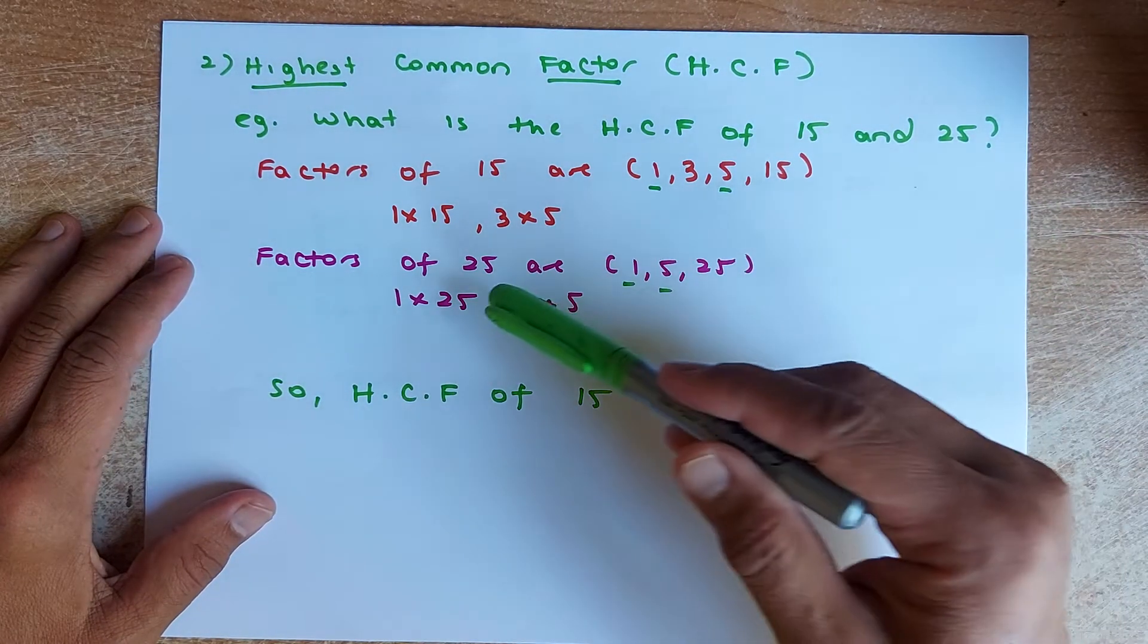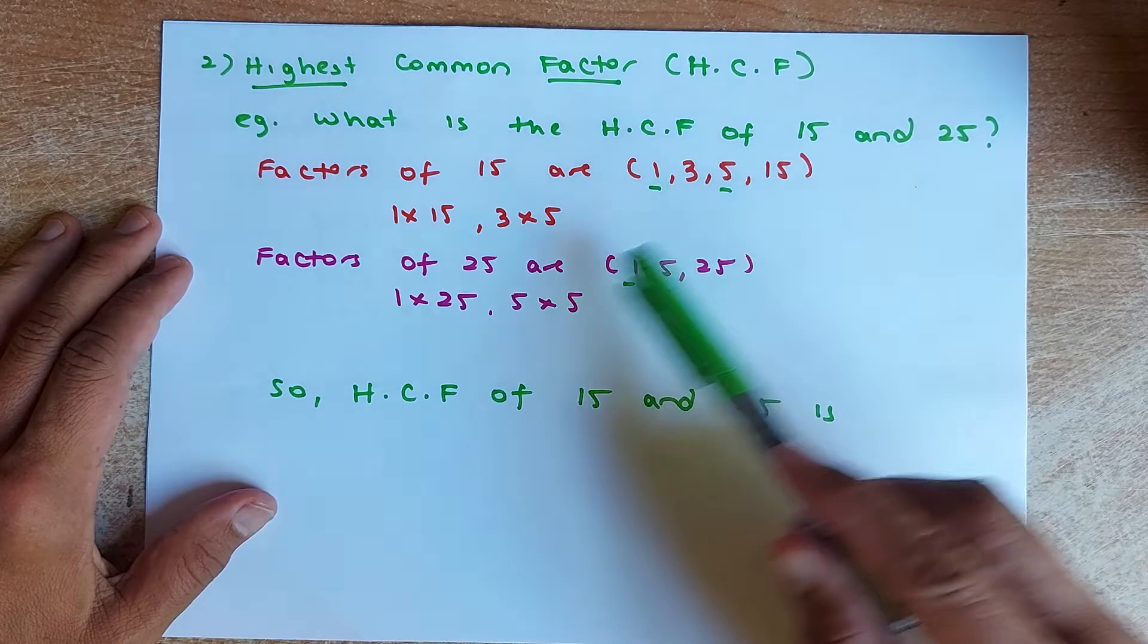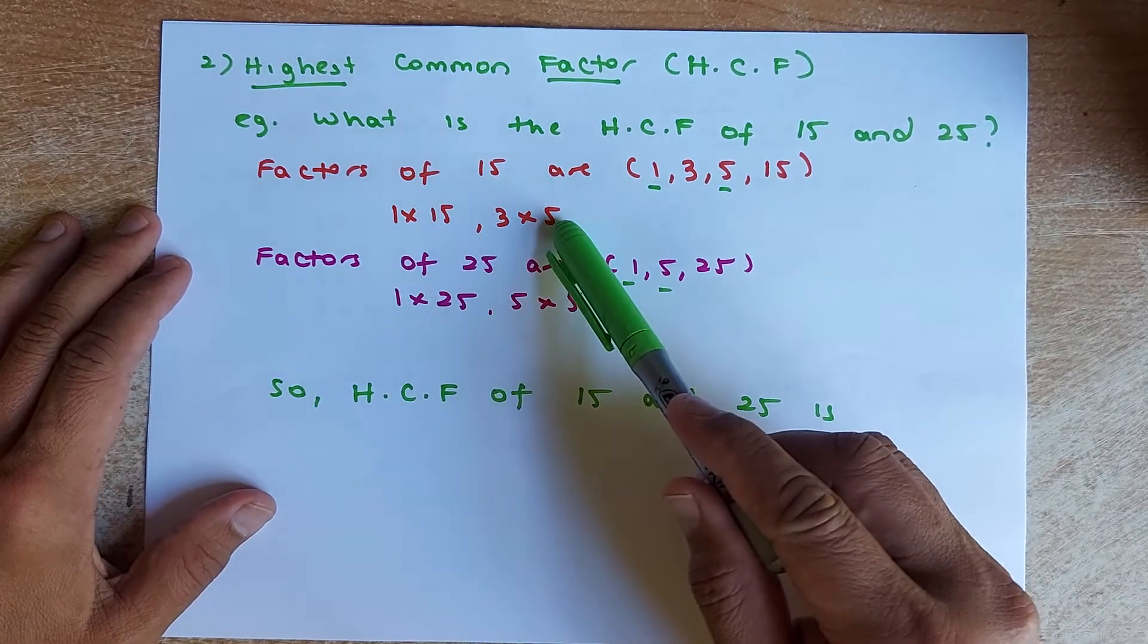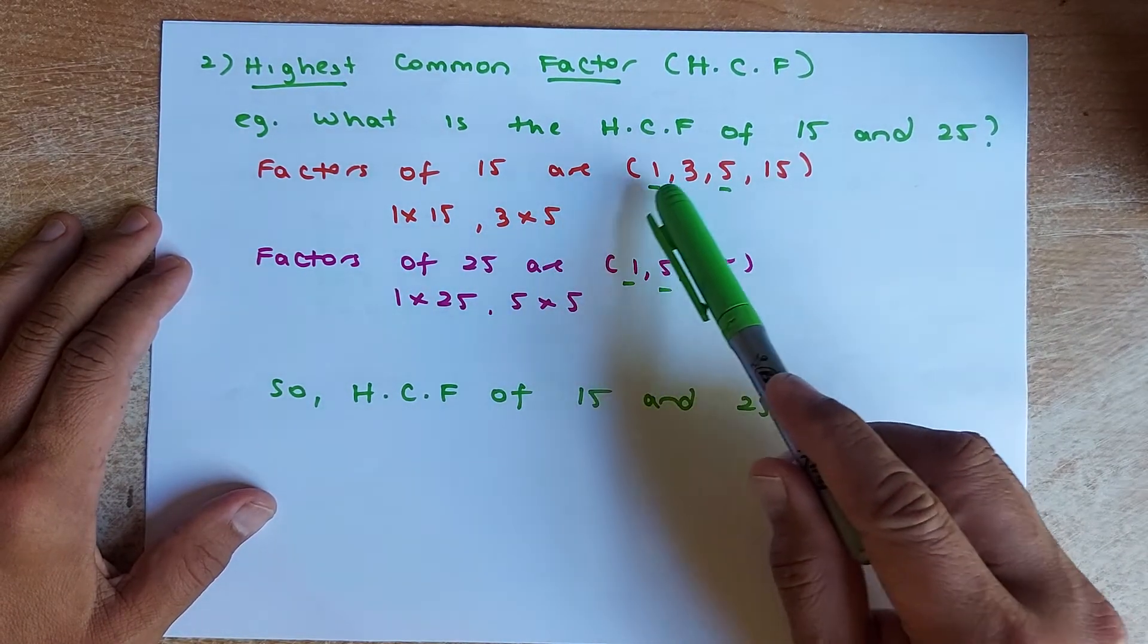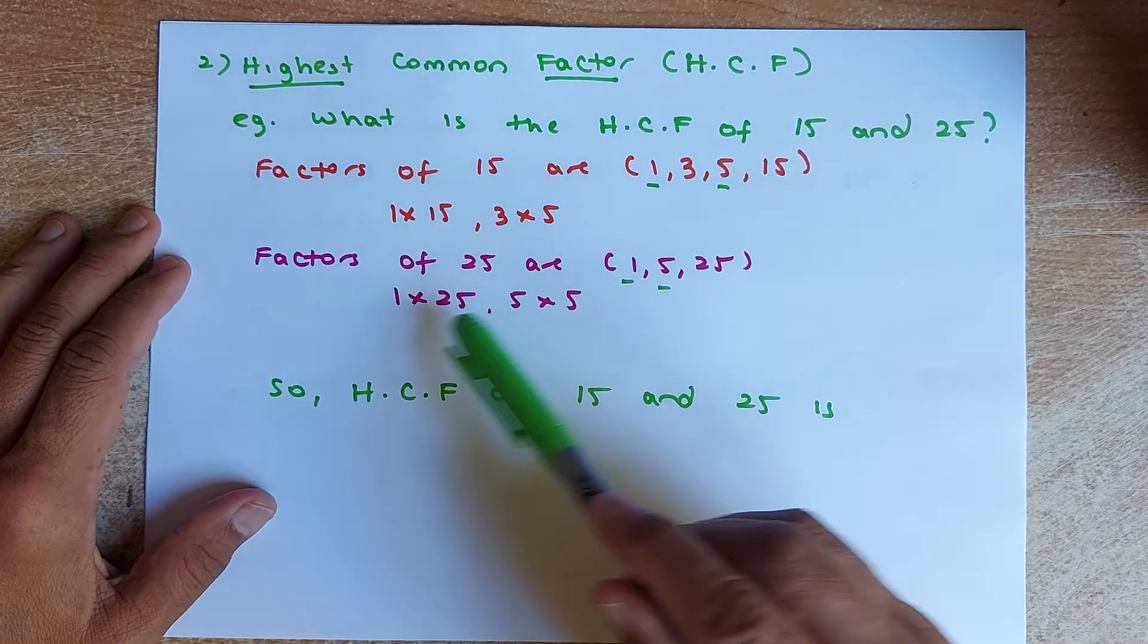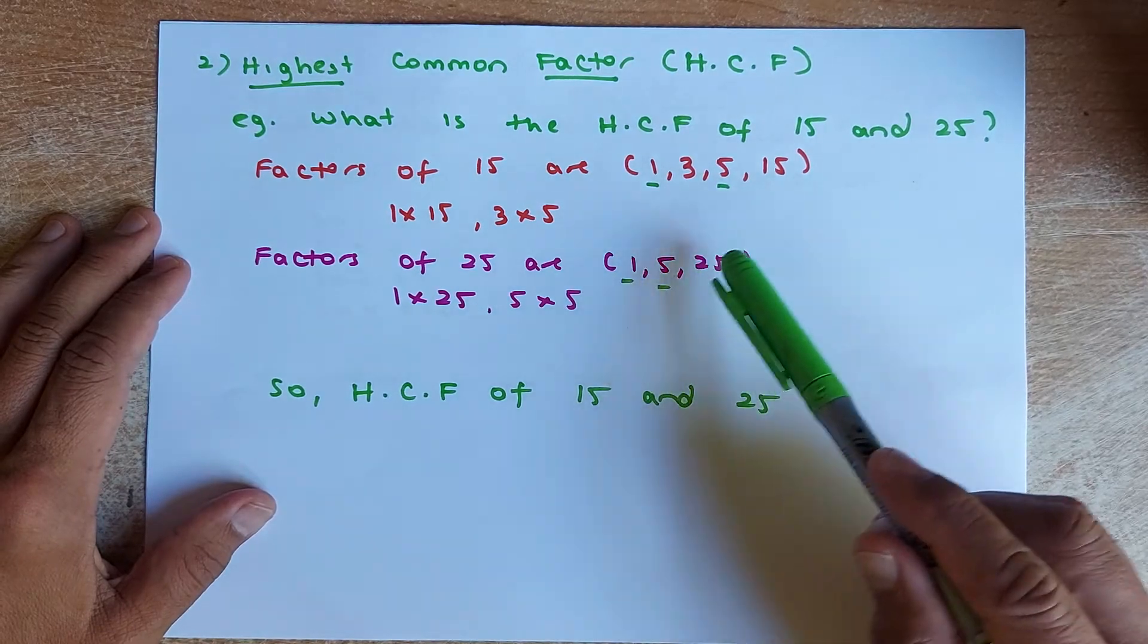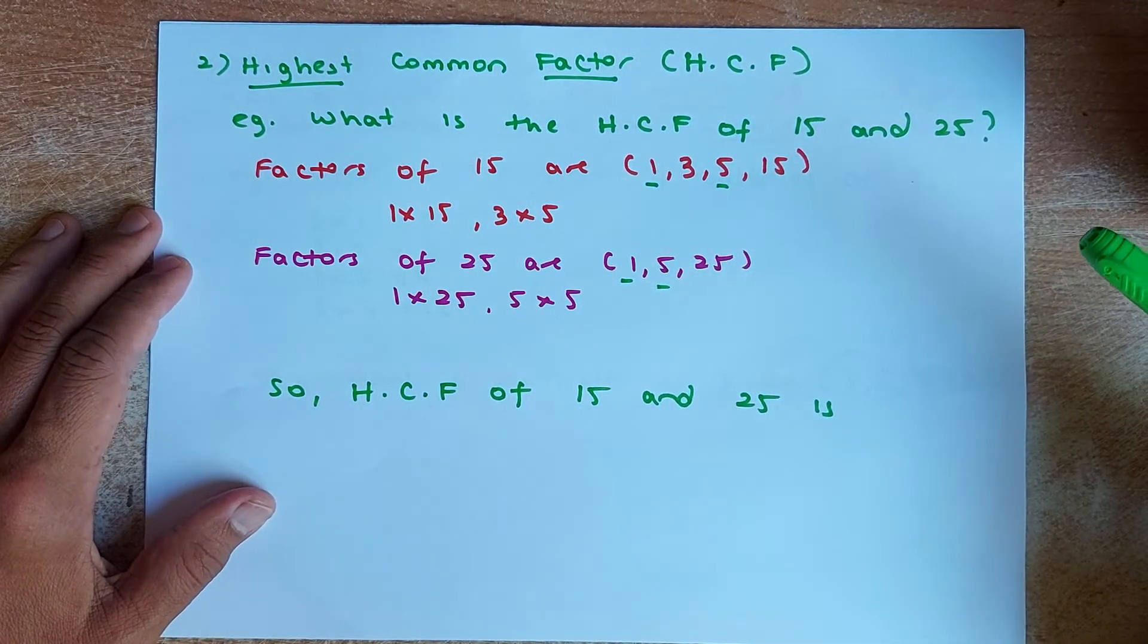So what you do, you're going to find the factors of 15 and then you're going to find the factors of 25. So what two numbers multiply to give you 15? 1 times 15, 3 times 5. So the factors of 15 is 1, 3, 5, 15. And the factors of 25 is 1 times 25, 5 times 5, so the factors is 1, 5, and 25.